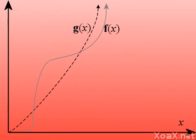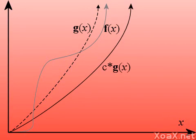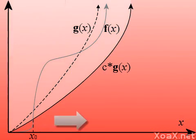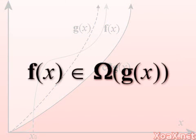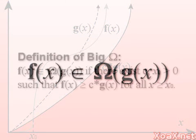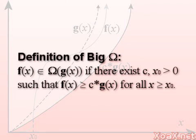On the other hand, we could bound the function f(x) from below. If such a constant exists such that c times g(x) bounds f(x) below from some point onward, then we say that f(x) is in Big Omega of g(x). Formally, f(x) is in Big Omega of g(x) if there exist positive constants c and x₀ such that f(x) is greater than or equal to c times g(x) for all x greater than or equal to x₀.